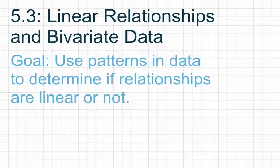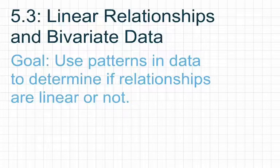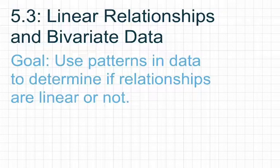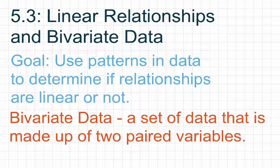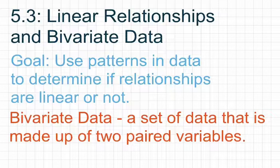I want you to notice that I'm providing the notes on graph paper on my iPad, so you should be using graph paper as well. I also want to quickly define bivariate data. Bivariate data can be defined as a set of data that is made up of two paired variables. In most of our problems, we pair up our variables as x and y, but any time we have two paired variables, it's going to be bivariate data.